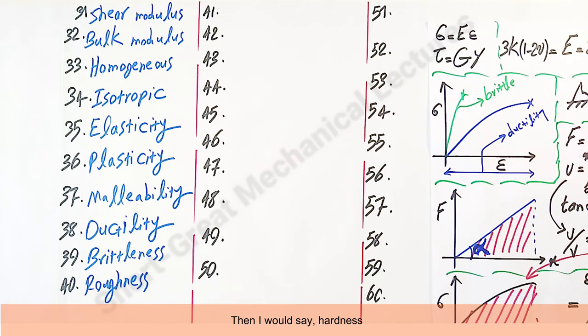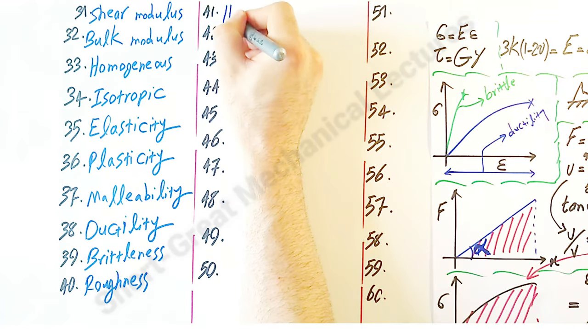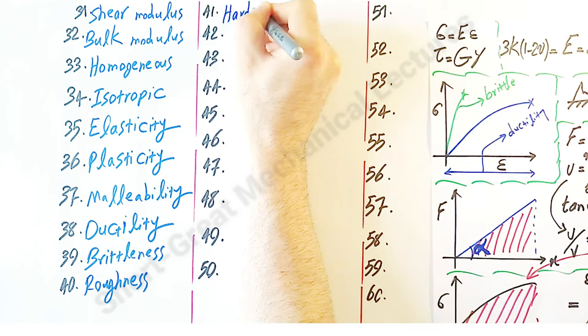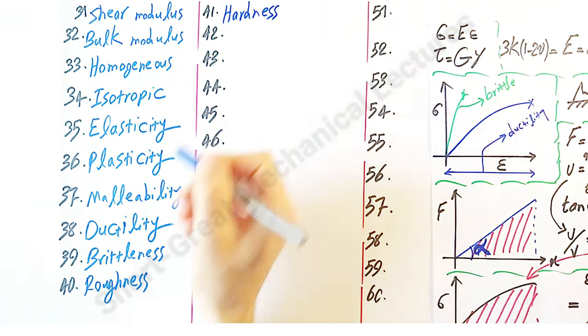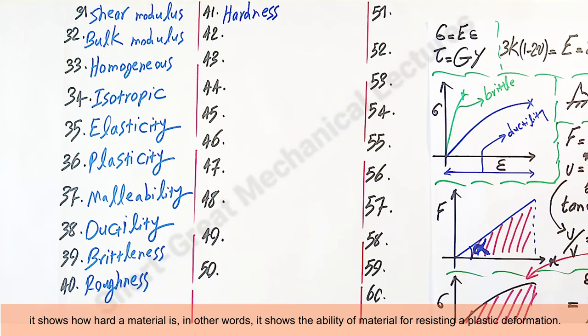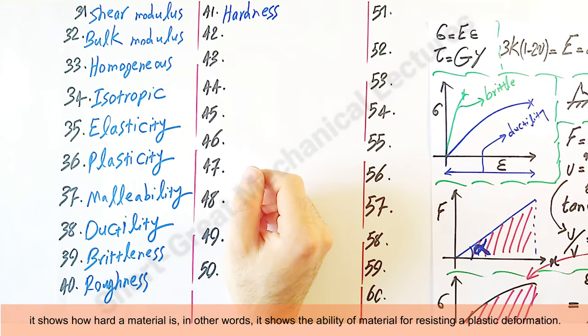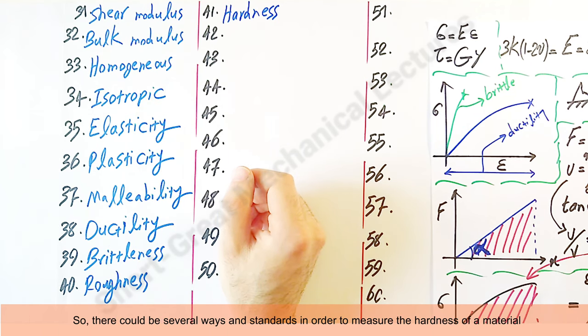Then I would say hardness. It shows how hard a material is. In other words, it shows the ability of material for resisting a plastic deformation.